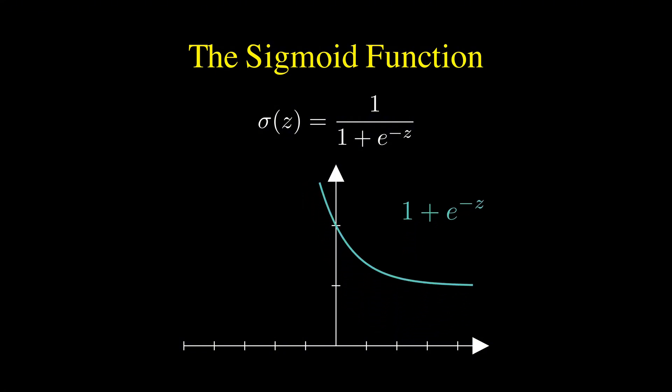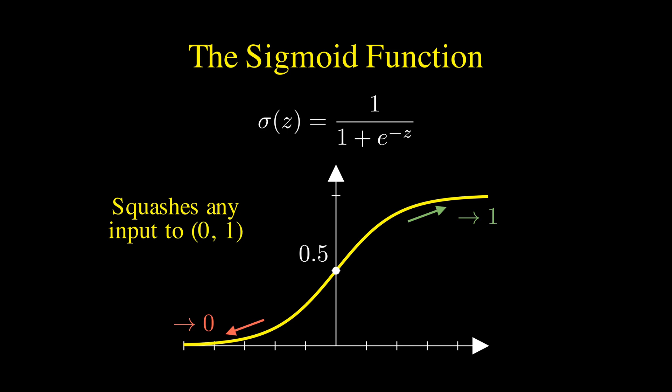The formula involves Euler's number, e. When the input is 0, the output is exactly 0.5. As the input gets huge, the output approaches 1. As it gets very negative, it approaches 0.